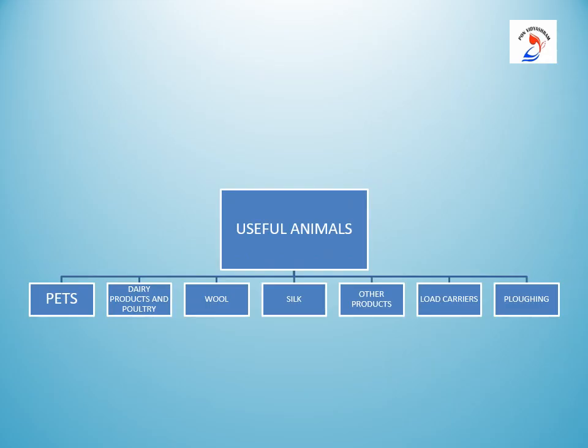Now we have completed the lesson 'Useful Animals'. We learned about pets, dairy products and poultry, wool, silk, and then other products like leather, fur and animal dung. We also learned about how animals are useful for transport and plowing. With this, we have completed the lesson.